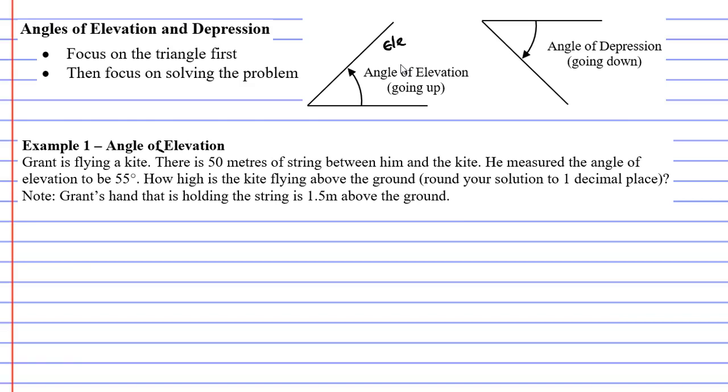Elevate means to go up. So whenever we talk about angles of elevation, you'll notice the angles going up. When we talk about the word depression, we think of someone feeling depressed or feeling down. So when we talk about angles of depression, we're talking about an angle that comes down.